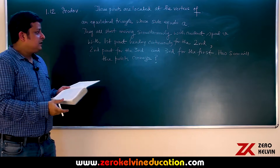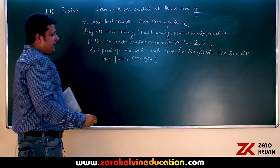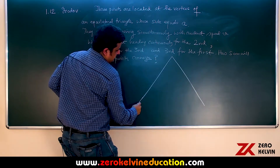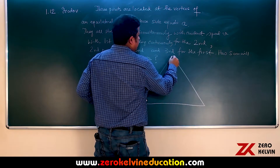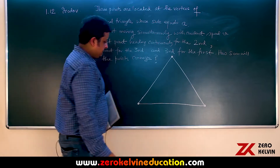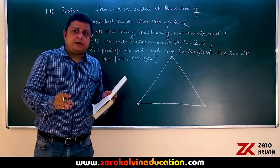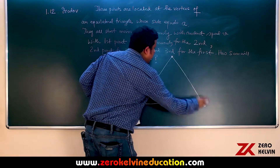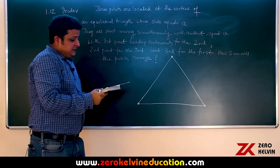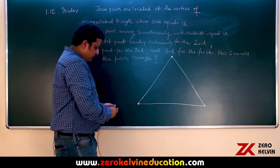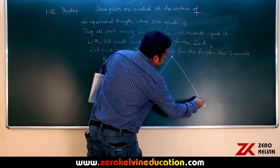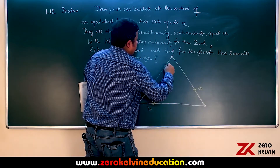Let's look at this problem. At start, this is the triangle and each side of the triangle is A. These are the particles at the corners of the triangle. At every moment: this is the first particle, second, and the third particle. The first particle moves continuously towards the second, so at start the velocity vectors of the particles are like this — this will have a velocity V here, this will have a velocity V here.